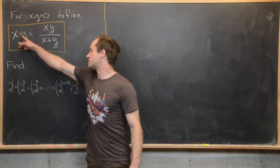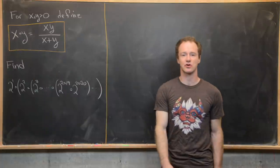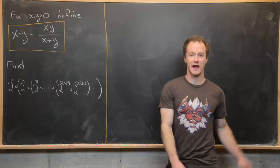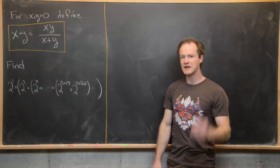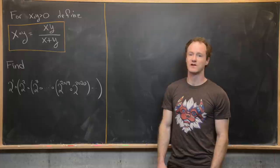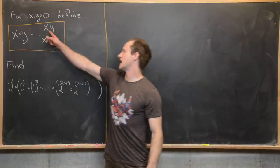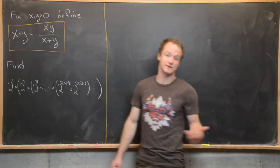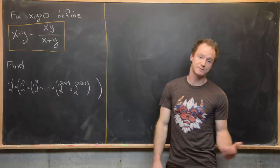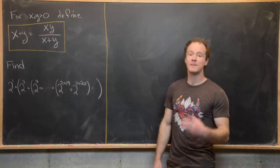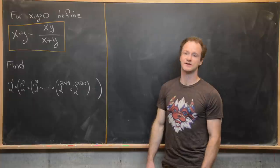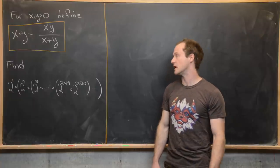We'll call it 'circle' and we have x circle y equals x times y over x plus y. This operation is most definitely commutative because x times y is y times x, and x plus y is y plus x. But a priori, we do not know if it is associative or not, so we can't assume that.